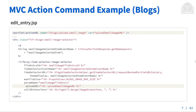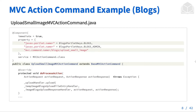Here's an example of an MVC action command at work, inside the blogs portlet in editentry.jsp. We're initializing our portlet action URL, giving it a name of /blogs/upload_small_image and a variable name of uploadSmallImageURL. In the section below, we're telling our Liferay item selector that the upload URL equals our uploadSmallImageURL defined above. Then in UploadSmallImageMVCActionCommand.java, we specify the javax portlet name — blogs portlet keys dot blogs — and the MVC command name /blogs/upload_small_image, matching what we defined in the JSP. The class is named UploadSmallImageMVCActionCommand and extends BasePortletMVCActionCommand.